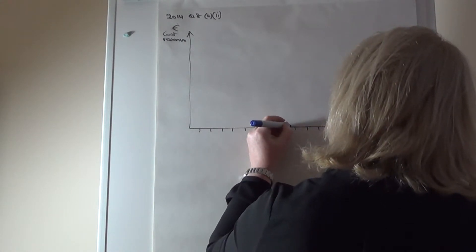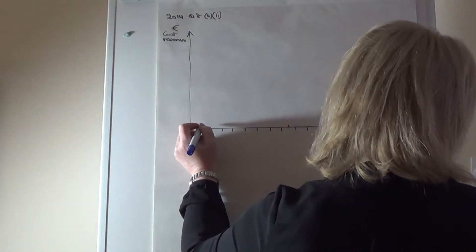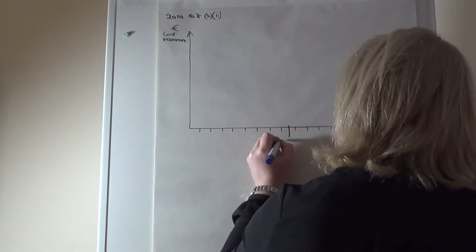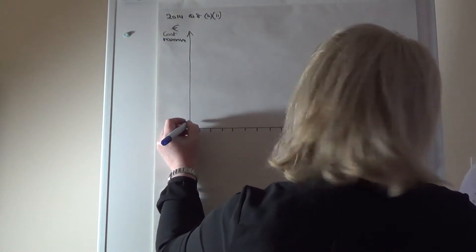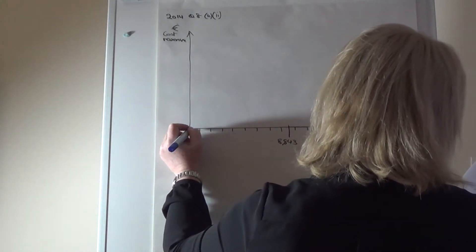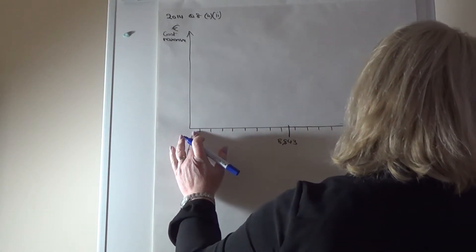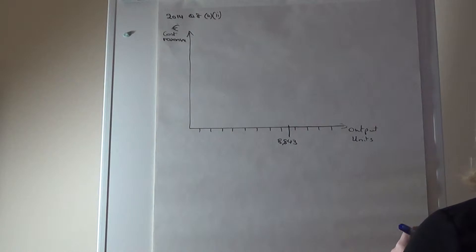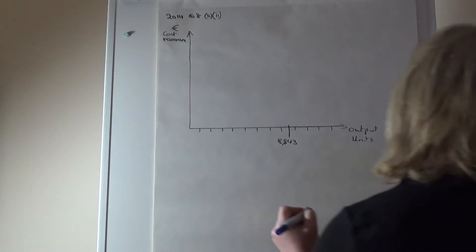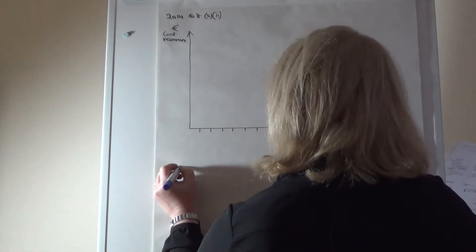So roughly here is my break-even in units, and I'm going to mark that at 8,843. Then I'm going to work out the revenue from that point.